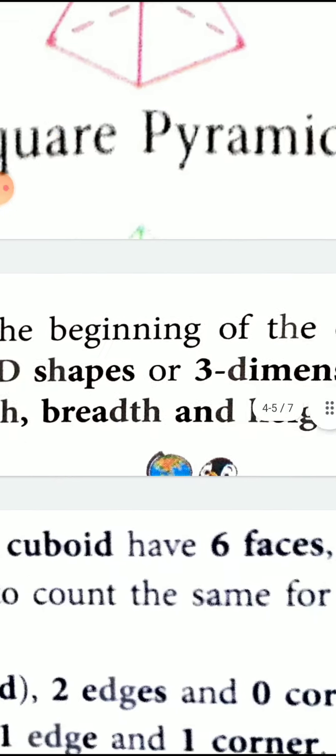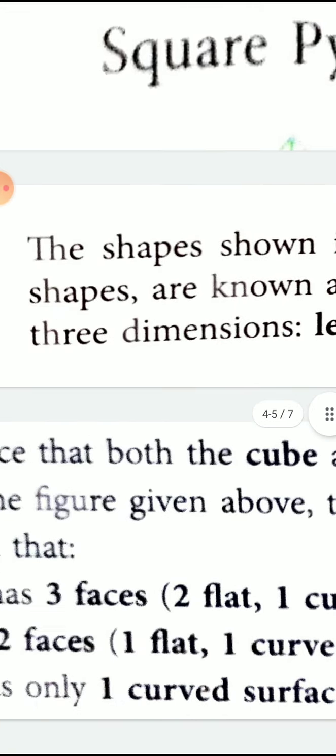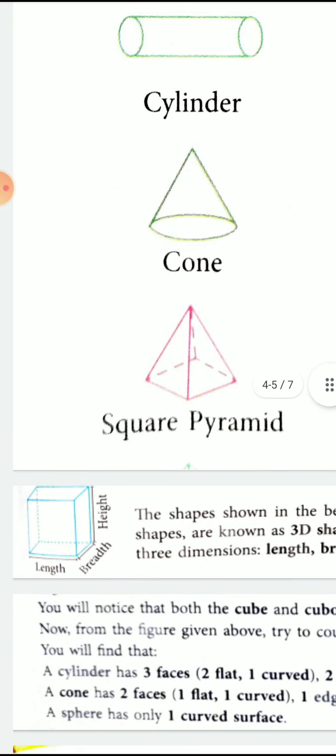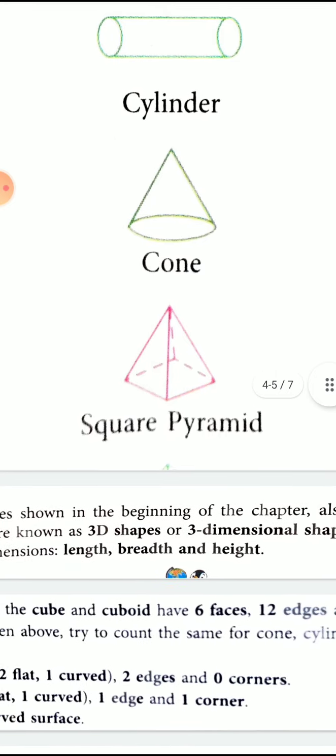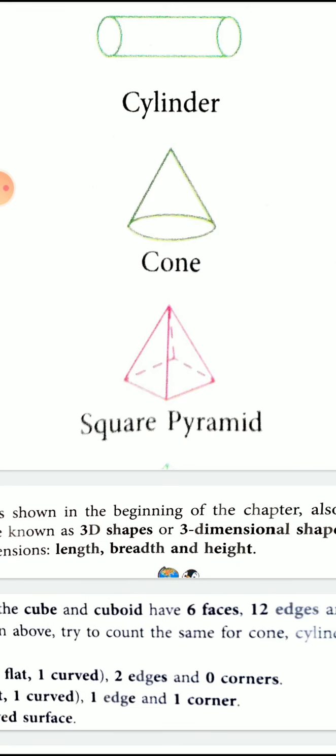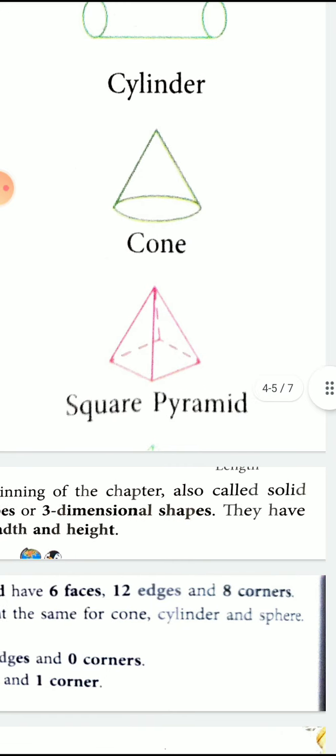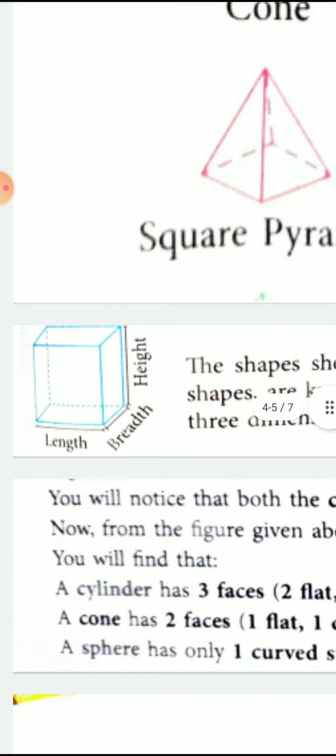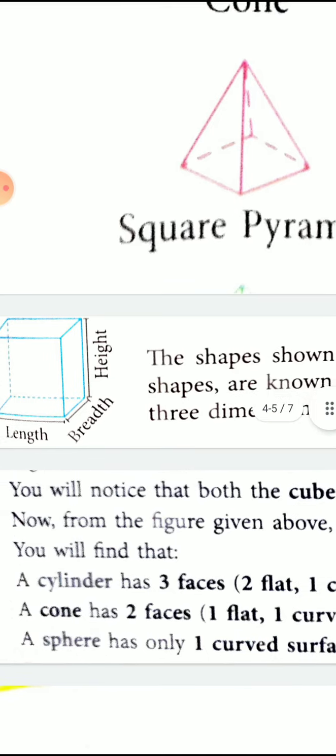Look at this figure. This is a 3D figure. In this, there is length, width, and height. In cube and cuboid there are six faces, 12 edges, and eight corners. Look at this figure. You know very well what corners are.